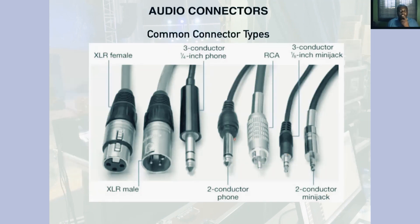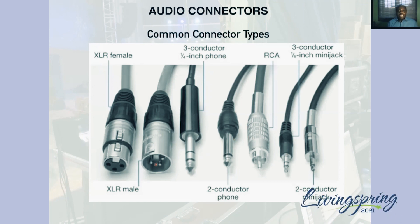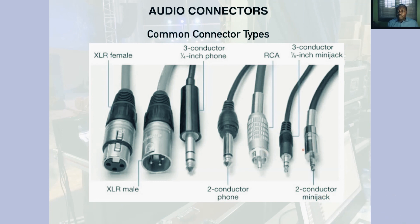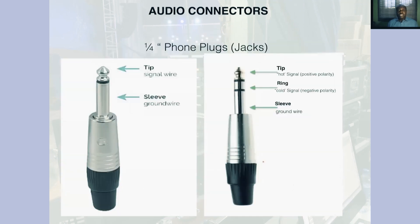The most common connector types we will come across are the XLR plugs, the quarter-inch phone jack — either two-conductor or three-conductor — the RCA, otherwise known as the phono plug, and the mini jacks, the one-eighth-inch jacks, some two-conductor and some three-conductor. Now let's look at how the phone jacks are connected.